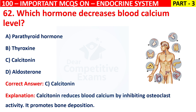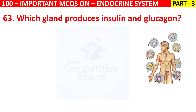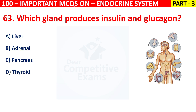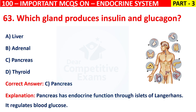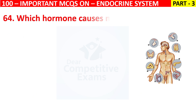It promotes bone deposition. Question 63: Which gland produces insulin and glucagon? Your options are Liver, Adrenal, Pancreas, or Thyroid. The correct answer is C, that is Pancreas. The pancreas has an endocrine function through the islets of Langerhans. It regulates blood glucose. Question 64: Which hormone causes milk ejection reflex?